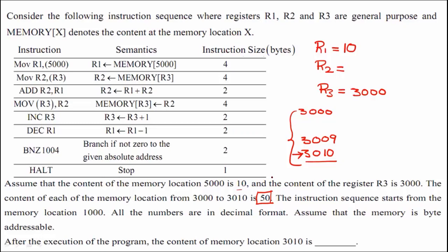So when you look at the question, you can reach a conclusion directly: the value of memory location 3010 will never get updated. This is even before dry running the program. The eventual answer is 50. Now, what we do is dry run the program and compare — with common sense we know the loop repeats 10 times, updating only 10 memory locations, and the 11th location at 3010 remains 50.